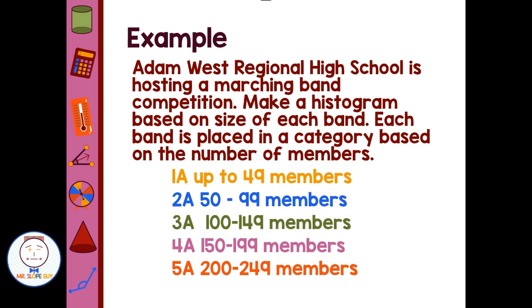Each band is placed into a category based on the number of members. So we have a category of 1A bands, and those have up to 49 members. A 2A band would be between 50 and 99 members. 3A band would be 100 to 149 members. And a 4A band, 150 to 199 members. 5A, 200 to 249 members.